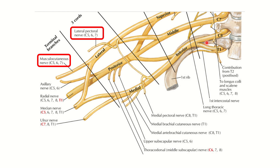In this first picture, we can see the lateral cord, medial cord, and posterior cord of the brachial plexus. From the lateral cord, we can see two nerves arising: one is the musculocutaneous nerve and another is the lateral pectoral nerve. So the musculocutaneous nerve arises from the lateral cord of the brachial plexus.